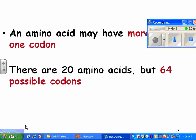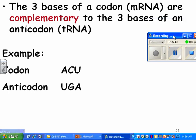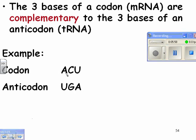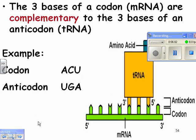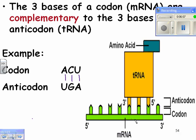There are 20 amino acids but 64 possible codons. The three bases of a codon on mRNA are complementary to the three bases of an anticodon on tRNA. For example, if the codon is ACU, the anticodon would be UGA. Here's an example: if the tRNA anticodon matches the mRNA codon, that part of mRNA will always code for that particular amino acid — maybe isoleucine.